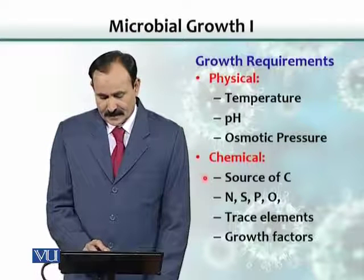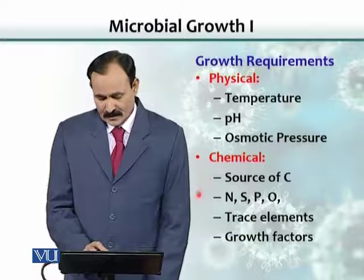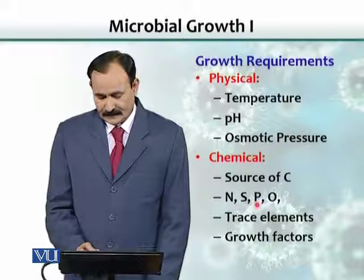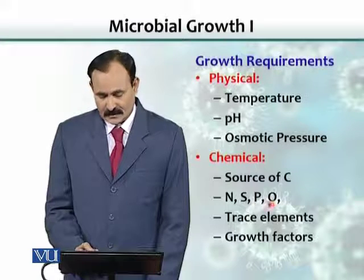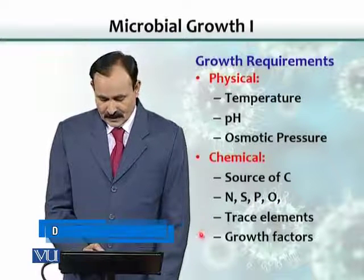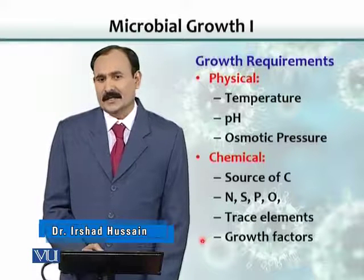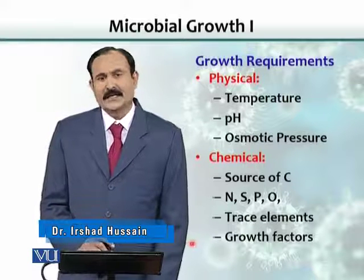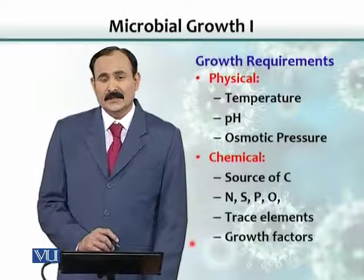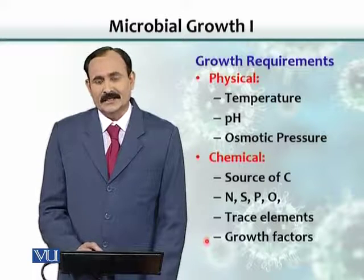For chemical requirements, bacteria need a source of carbon, a source of nitrogen, sulfur, phosphorus, and oxygen. Similarly, there should be trace elements as well. Growth factors are also required, just as any living organism requires growth factors — especially for metabolic pathways — so bacteria also need growth factors.